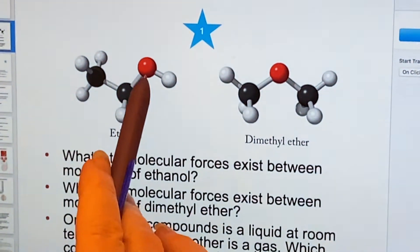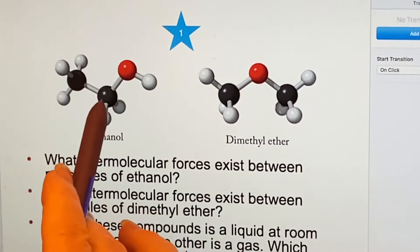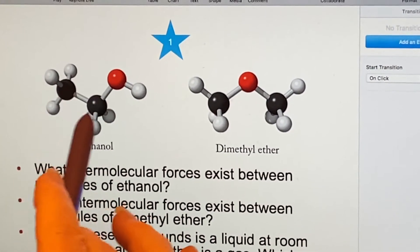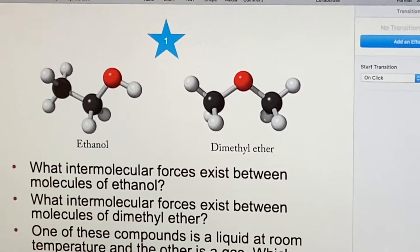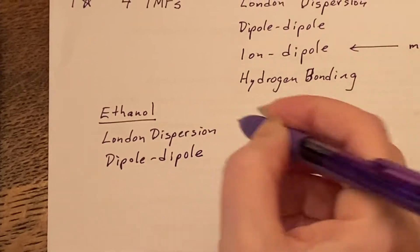Does this have a dipole? Well, yes, it does because oxygen is more electronegative than carbon or hydrogen. And so just from the fact that this is not perfectly symmetrical, we know we're going to have dipole-dipole. It's got one end that's definitely more positive than the other.